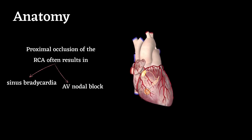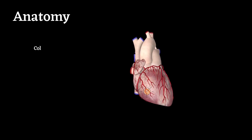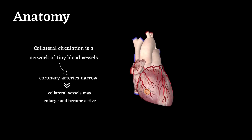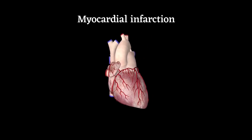Proximal occlusion of the right coronary artery often results in sinus bradycardia and may also cause atrioventricular nodal block. Collateral circulation is a network of tiny blood vessels. When the coronary arteries narrow to the point that blood flow to the heart muscle is limited, collateral vessels may enlarge and become active, allowing blood to flow around the blocked artery to another artery nearby.